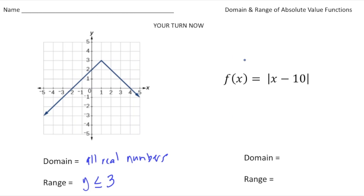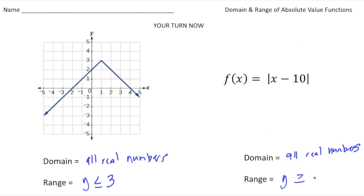For f(x) equals the absolute value of x minus 10, the domain is going to be all real numbers. This negative 10 is going to shift the graph to the right 10 spots, but it's not going to bring it up or down. So because of that, the range is going to be y is greater than or equal to zero. And there it is — how'd you do?